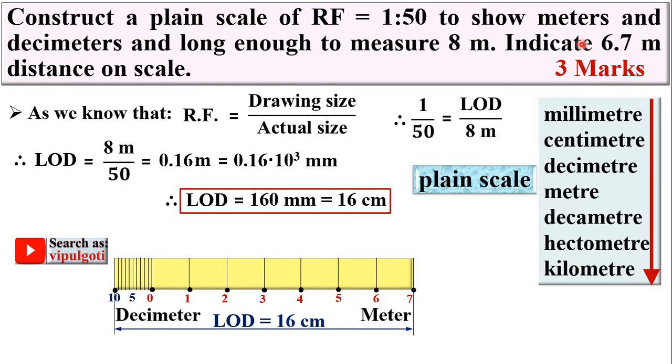Now the second task: indicate 6.7 meter distance on the scale. Here you can see 6 meters and 0.7, that means 7 decimeters. So 6.7 means 6 meters and 7 decimeters.